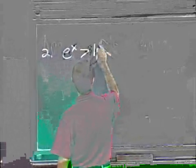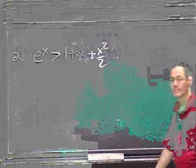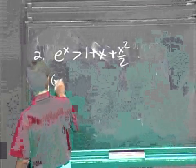And the next thing I want to prove to you is that e to the x is bigger than 1 plus x plus x squared over 2. So how do I do that? I introduce a function g, which is e to the x minus this.